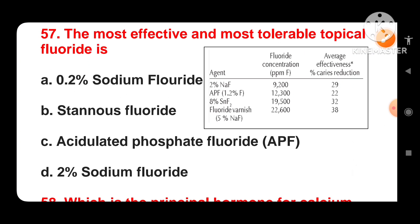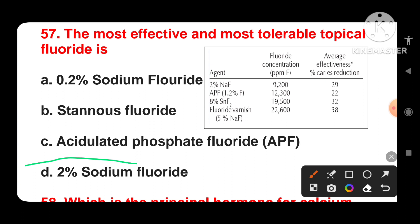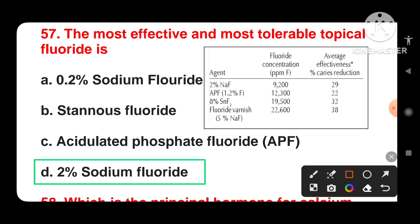Next question: the most effective and most tolerable topical fluoride is — options are 0.2% sodium fluoride, stannous fluoride, acidulated phosphate fluoride, or 2% sodium fluoride. The correct answer is 2% sodium fluoride. 2% sodium fluoride is the most effective and most tolerable topical fluoride.